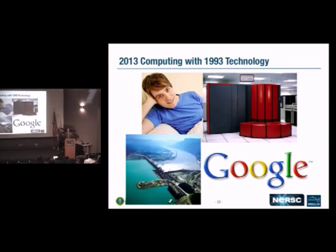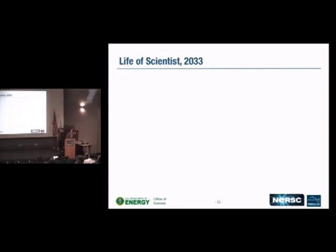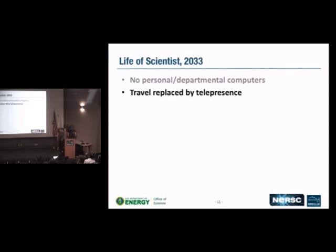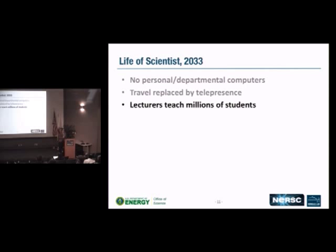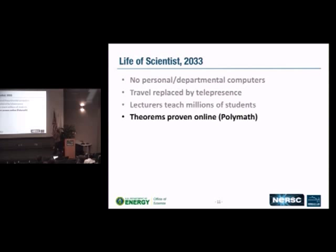Rolling 20 years forward — always dangerous to predict — but: there are no personal computers, no departmental computers, only client devices which may be embedded or invisible as people try to get rid of keyboards and screens. There's the cloud, which includes scientific computing facilities like NERSC. We don't travel very much because we do much more telepresence. Lectures are taught to millions of students through MOOCs — courses with tens of thousands to hundreds of thousands of students. Theorems might even be proved online via things like the Polymath project.